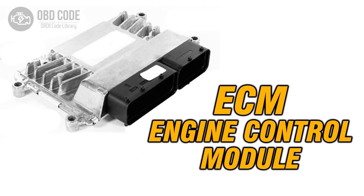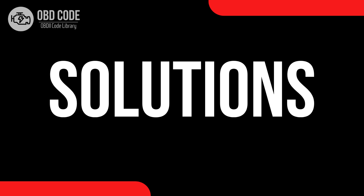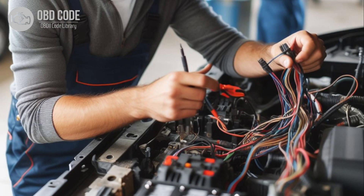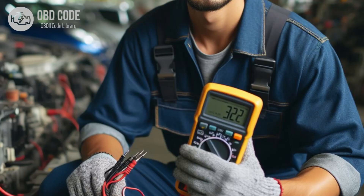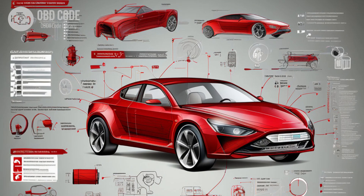Code solutions P0652: 1. Inspect the wiring and connectors in the sensor reference voltage B circuit for any signs of damage, corrosion, or loose connections. Repair or replace damaged components as necessary. 2. Clear the trouble codes and perform a test drive to verify if the issue persists. If the code returns, further diagnosis may be required. 3. Check the voltage output of the ECM or PCM.